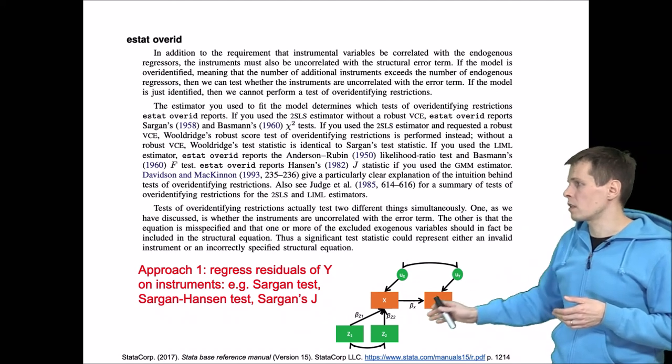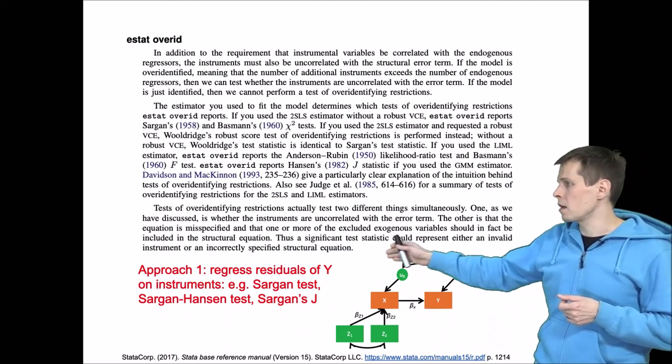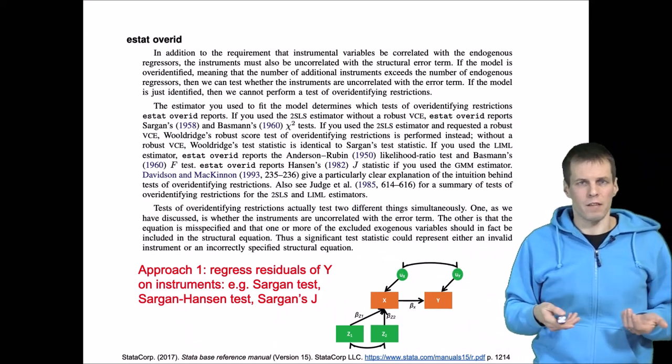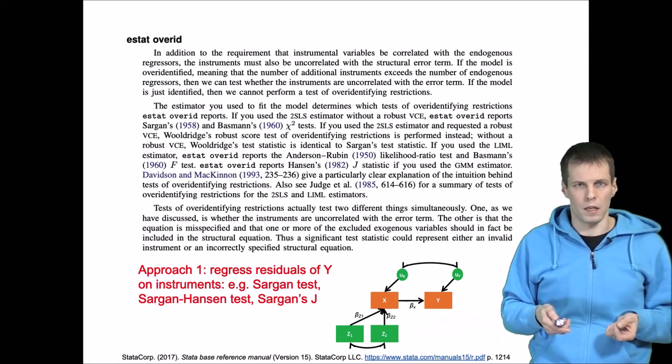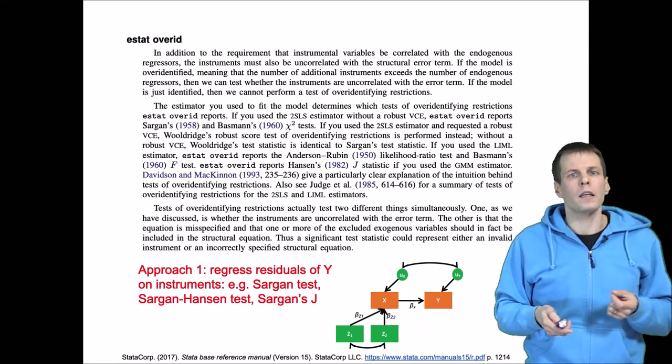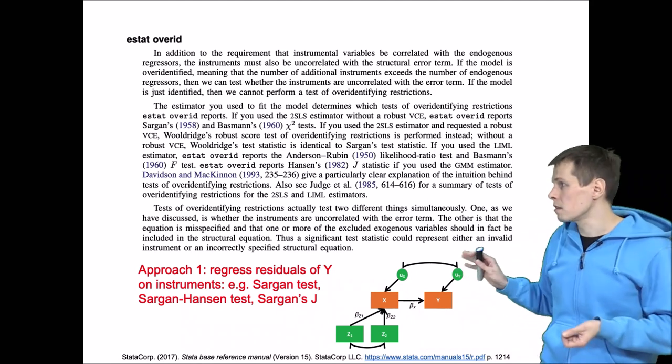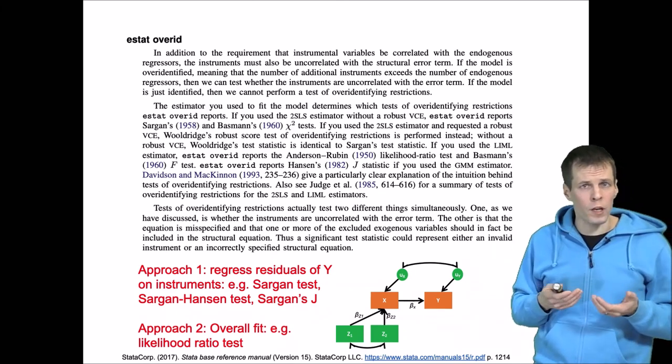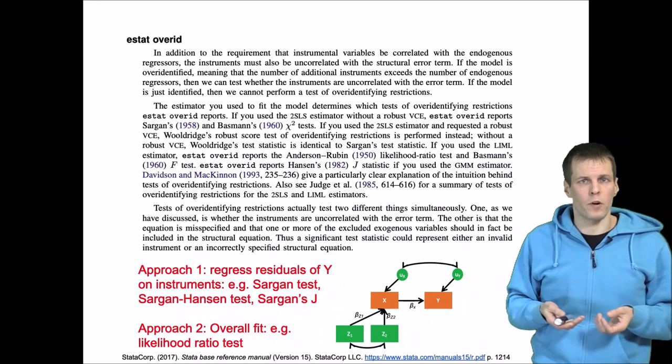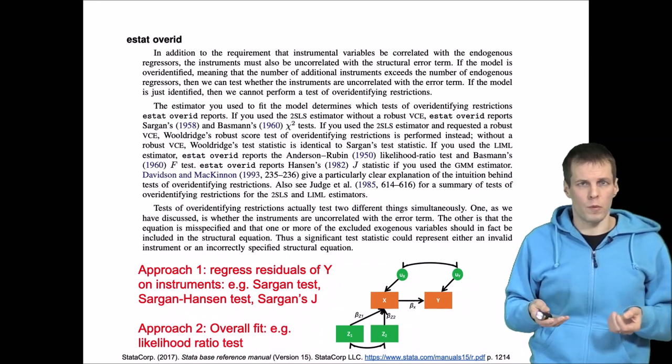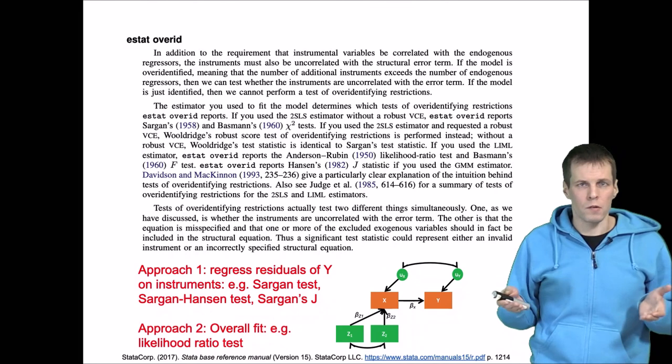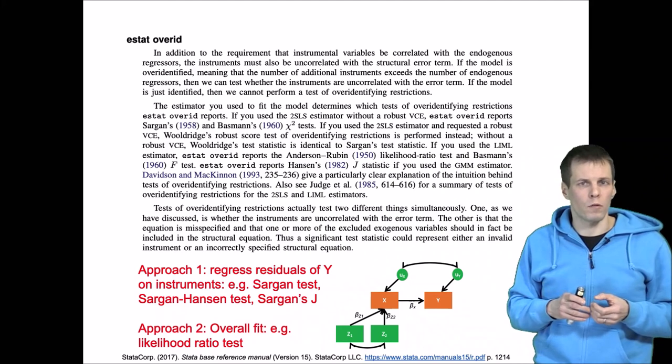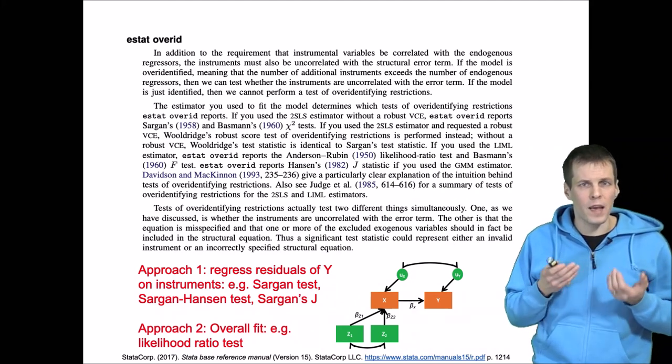We take the residual here. We take the Z's here and regress. This is the idea of Sargan tests, Sargan Hansen tests and Sargan J, which are very similar. It's like a family of different tests building on this idea. Another idea that we can implement is to test the overall fit of this model. So we can use the one degree of freedom from this model for model tests. For example, if we run structural equation modeling (SEM), then we can do a chi-square test for overall model fit. If the model is rejected, then we could conclude that the instruments may not be valid.